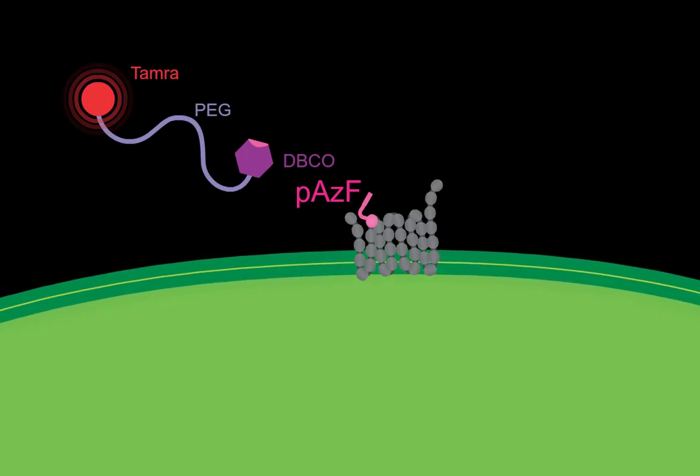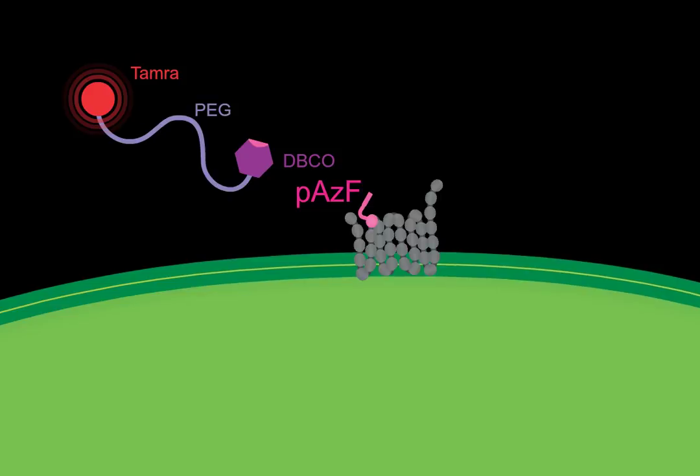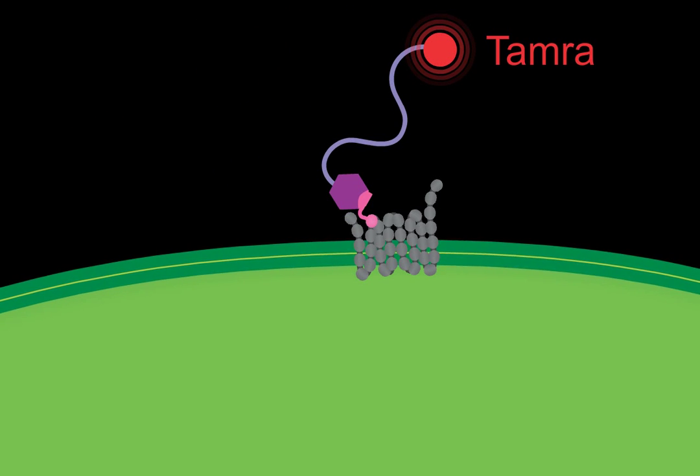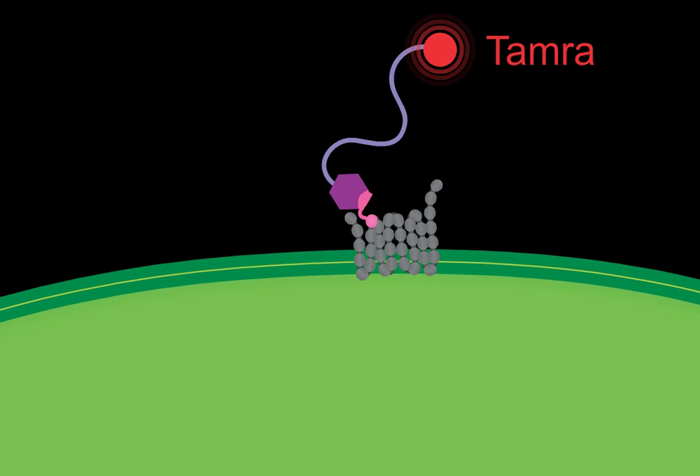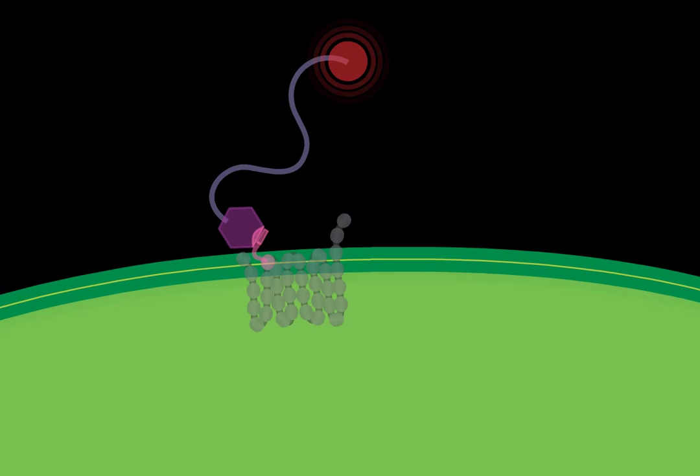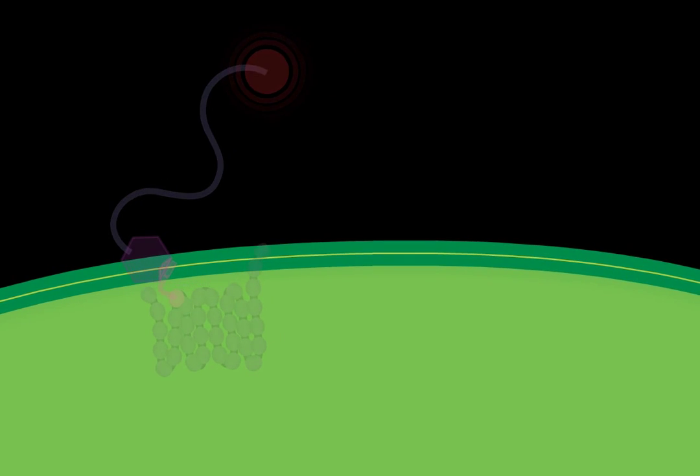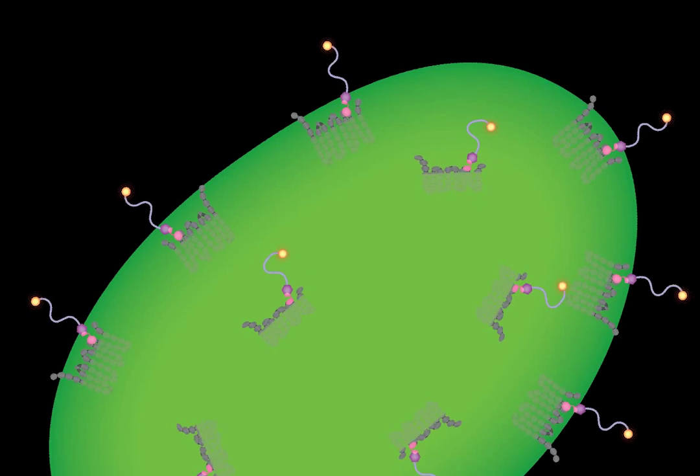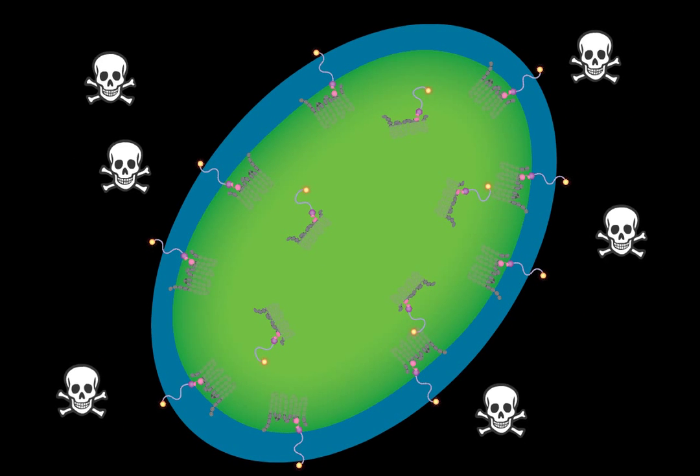The DBCO functionalized molecule can now click to the COMP. In this case, this molecule contains a fluorescent dye, TAMRA, which enables the evaluation of the click reaction. This reaction happens at multiple sites of the outer membrane. Any DBCO functionalized molecule can be clicked onto the membrane. This way a coating with specific properties can be formed.